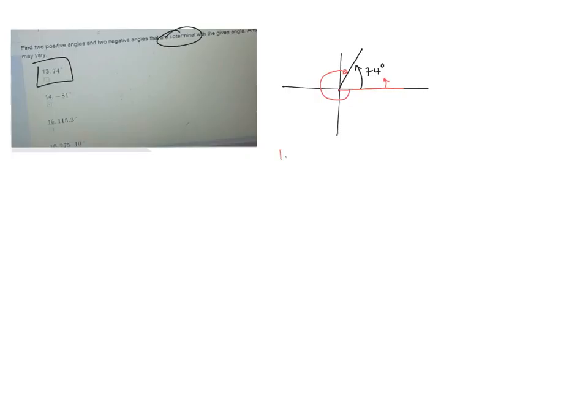And to get that one, it'd be a whole rotation. So it'd be 360 take away the 74 degrees. So that would be, I think, 286 degrees. Oh, and it's going backwards, so it'd be negative. So negative 286 would be one negative angle.